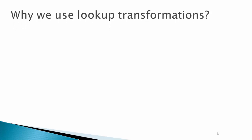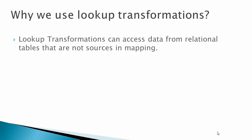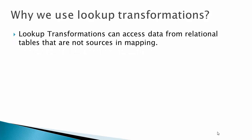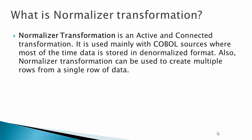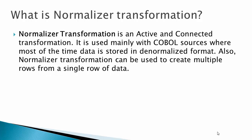Lookup transformation is used to access data from relational tables that are not a source in the mapping. Normalizer transformation is an active and connected transformation. It is used mainly with COBOL sources where data is stored in denormalized format. Normalizer transformation can also be used to create multiple rows from a single row of data.